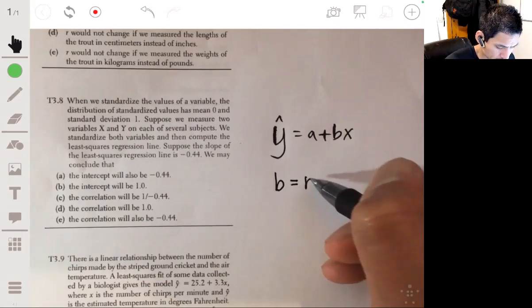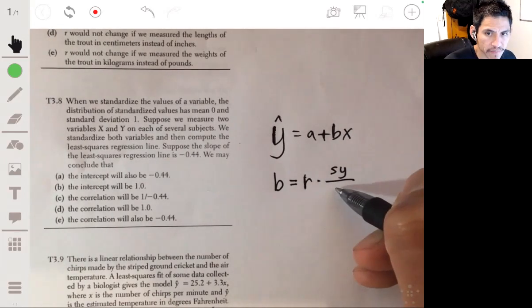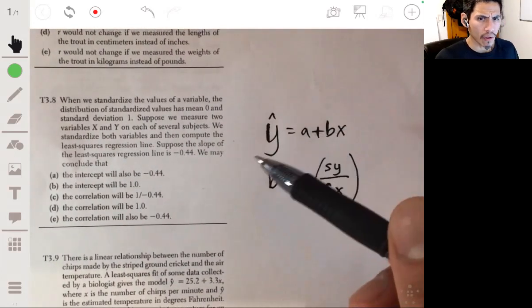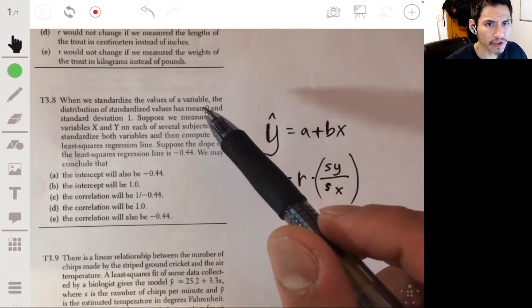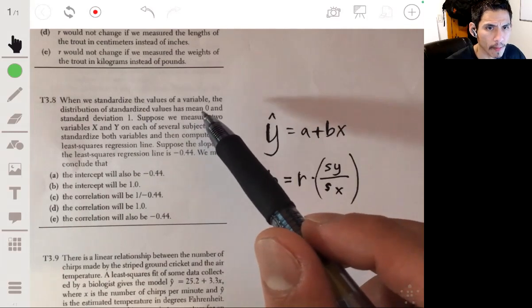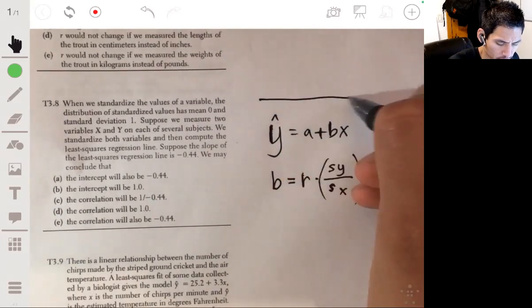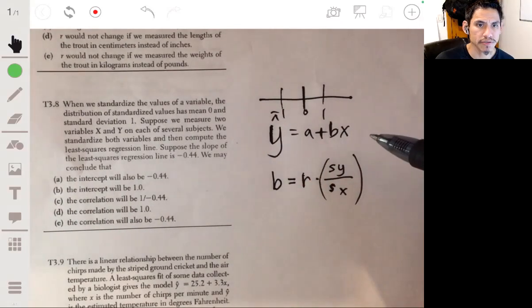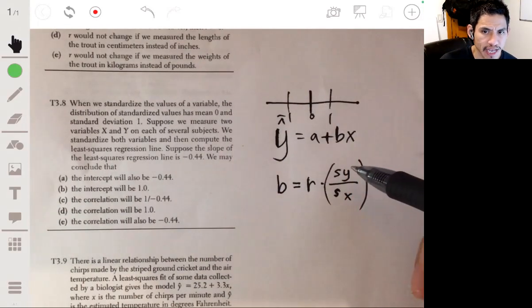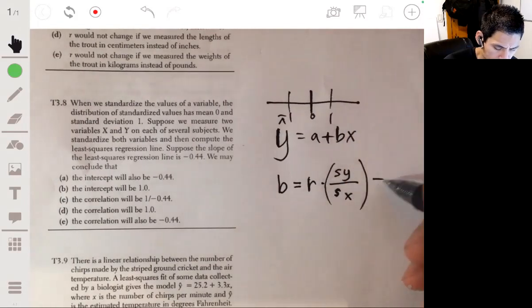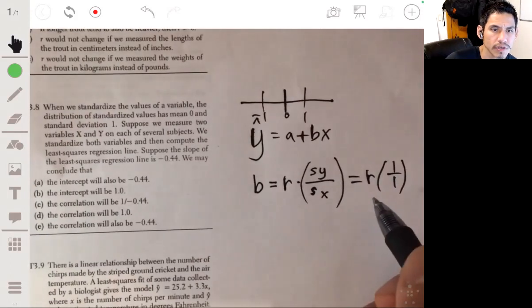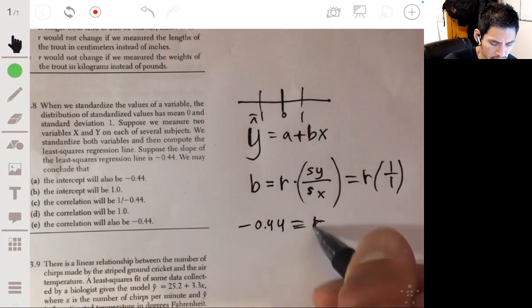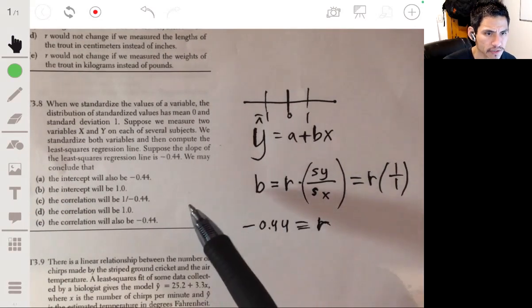b is also equal to the correlation r times the standard deviation of y over the standard deviation of x. Now, since the values of the variable are standardized, the values of it will follow standard deviation zero, standard deviation of one. So then, if they're standardized, it means standard deviation of y and standard deviation of x are both one. And this is just r times one over one. So then, if the slope is negative 0.44, then b is negative 0.44, or negative 0.44 equals r, or r is just negative 0.44. And so then the answer would just be E.